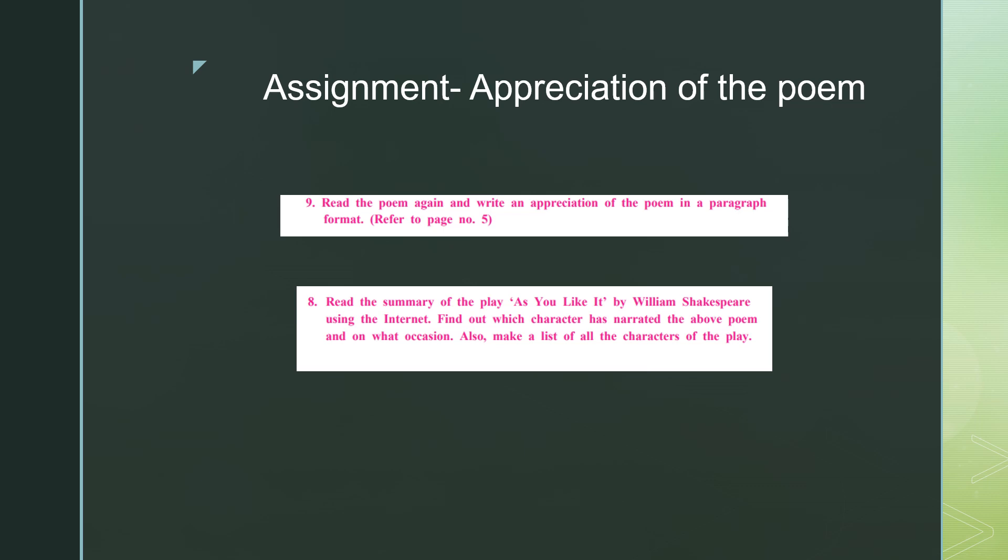Read the summary of the play As You Like It written by William Shakespeare, and find out the character that narrated the poem and on what occasion. As already discussed, the character who narrated the poem is called Jacques, and he narrates this in Act 2, Scene 7. Some other characters in the play are Celia, Rosalind, Orlando, Oliver, Duke Senior, Duke Frederick, and Touchstone. As You Like It is a play in your 12th standard textbook, so you can learn more about it when you reach the 12th. The second assignment is to read the poem again and write an appreciation of it in paragraph format, referring to the previous paragraph appreciation that was taught. Thank you everyone — post your doubts in the comment section and I will be happy to answer. Till then, stay tuned to my channel and stay safe. Bye-bye.